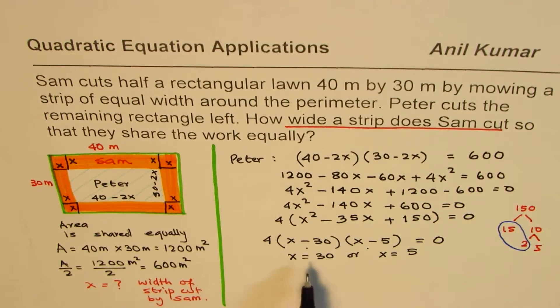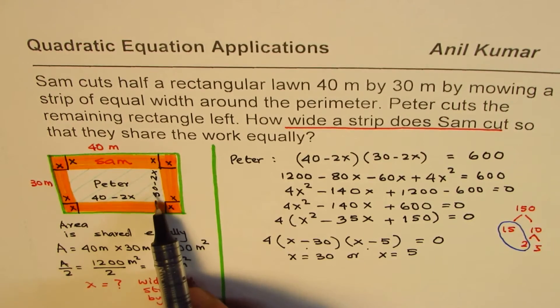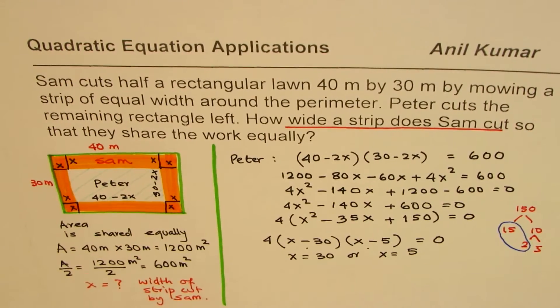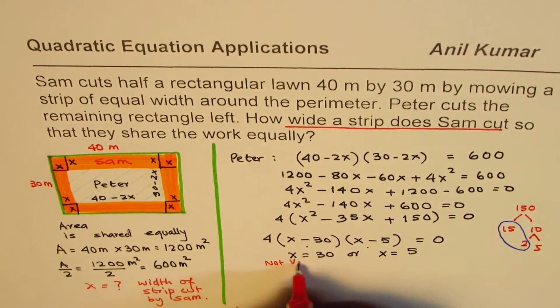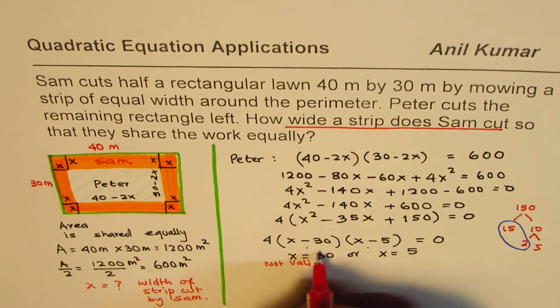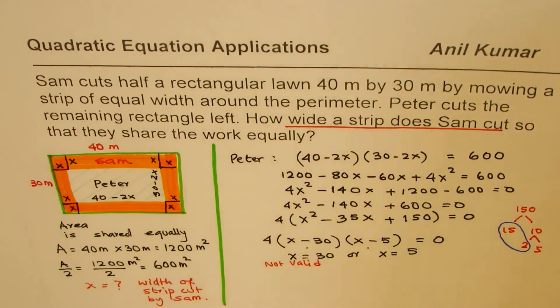Now the question is, can x be 30? Well, if I make x as 30, then you get a negative number here, so x equals 30 is not valid. We kind of reject this.